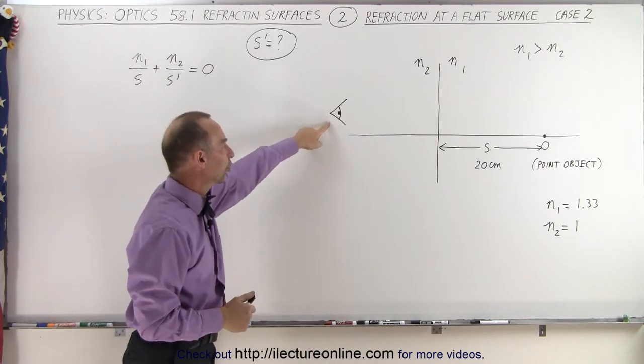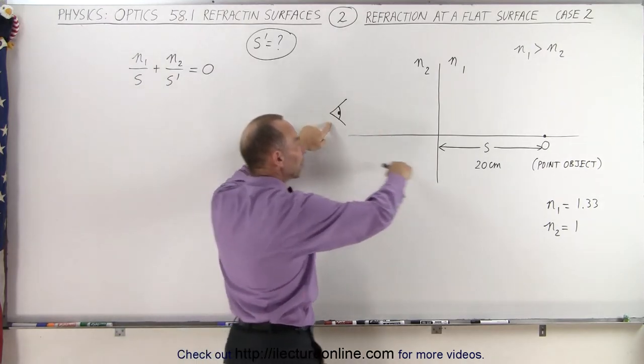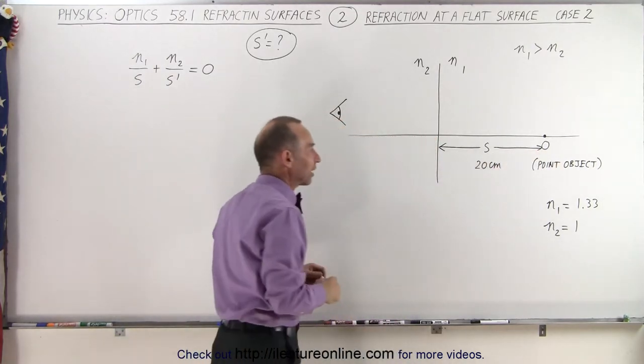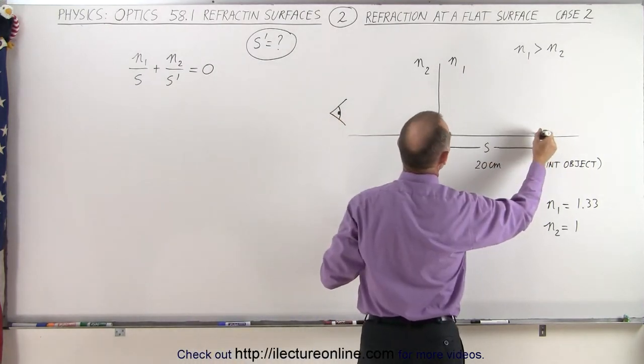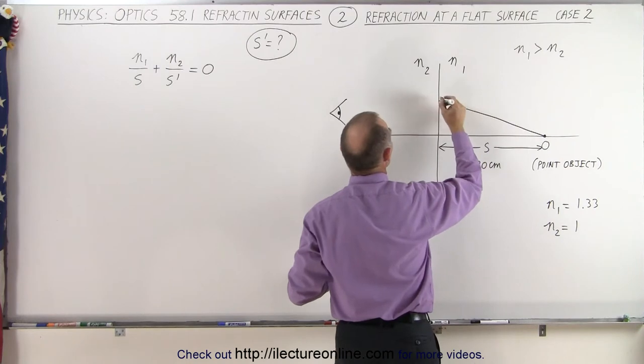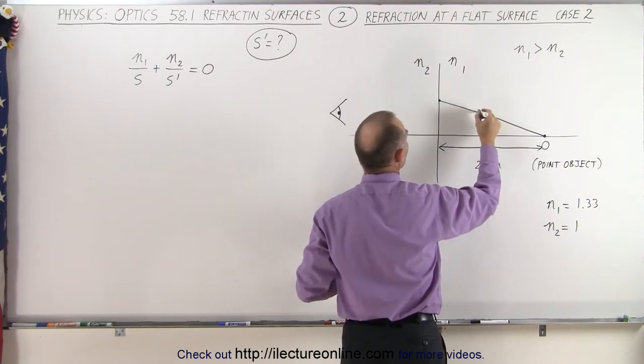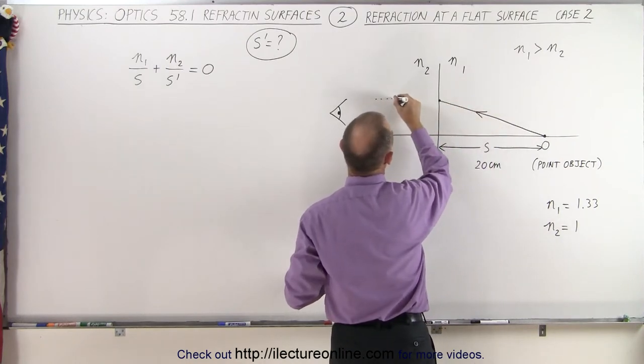Notice that the observer is on the other side of the boundary relative to the object. So what we're going to do is have a single ray go from the object to the boundary, like this, at some point right there.